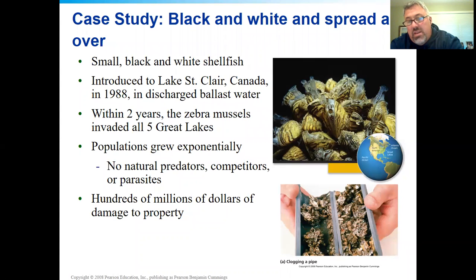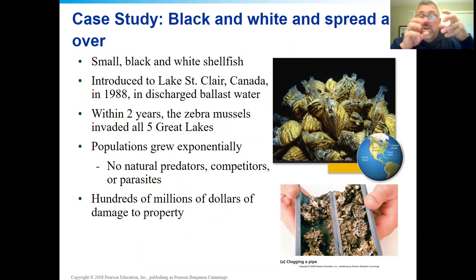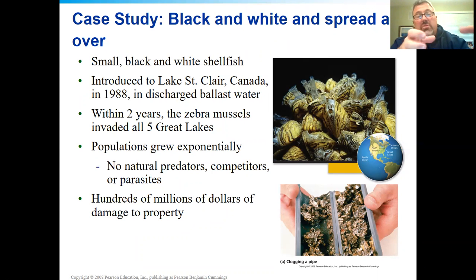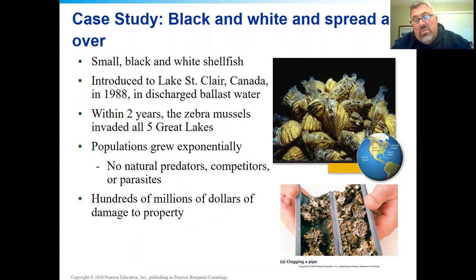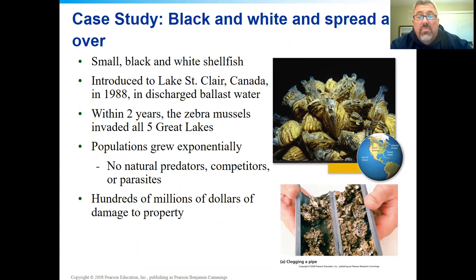Zebra mussels are what's called an invasive species — they've come into an area. What they did is travel on ships. These big vast ships have ballast water in their hulls. They flood a portion of the hull so they sit deeper in the water and aren't rocking as much. The water in the hull reduces the amount of movement. They fill this water from wherever they're at — Europe or anywhere — and when they come into the Great Lakes and get to where they're going, they discharge that ballast water.